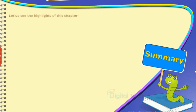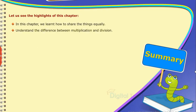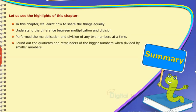Summary: Let us see the highlights of this chapter. In this chapter, we learned how to share things equally, understand the difference between multiplication and division, performed the multiplication and division of any two numbers at a time, and found out the quotients and remainders of the bigger numbers when divided by smaller numbers.